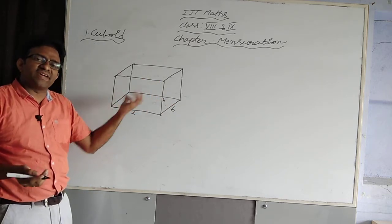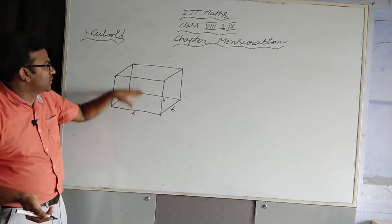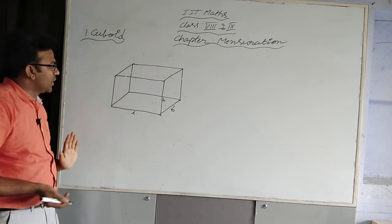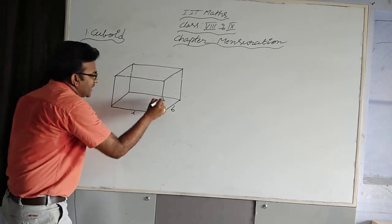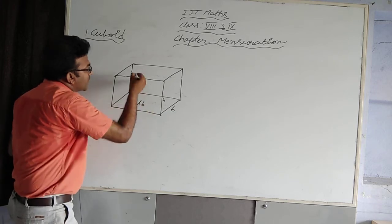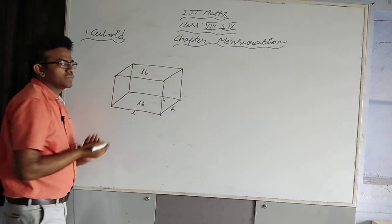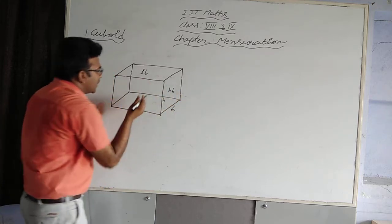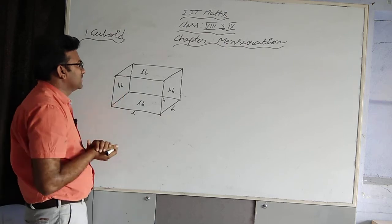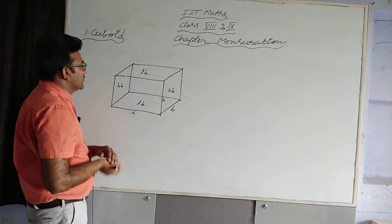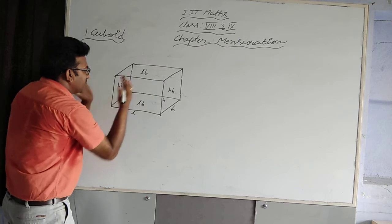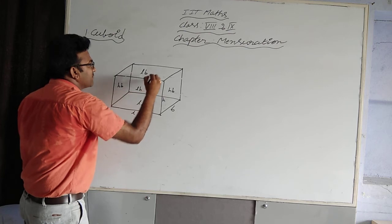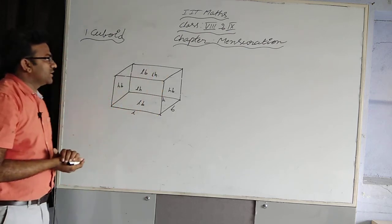This cuboid has six faces: bottom, top, sides, front, and back. Area of the base is length times breadth — LB. The top is also LB. The side is HB, and the opposite side is also HB. The front view is LH, and the back view is also LH.